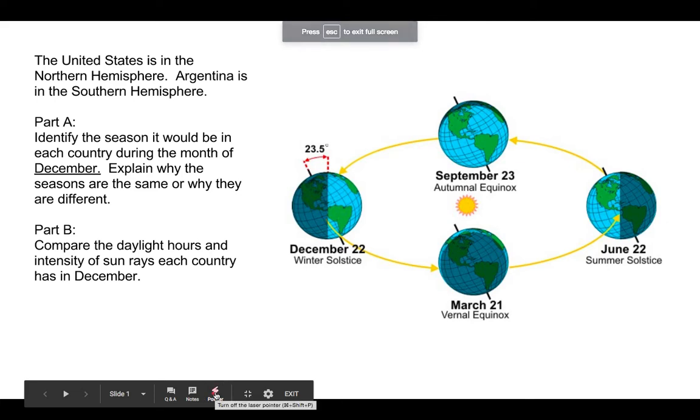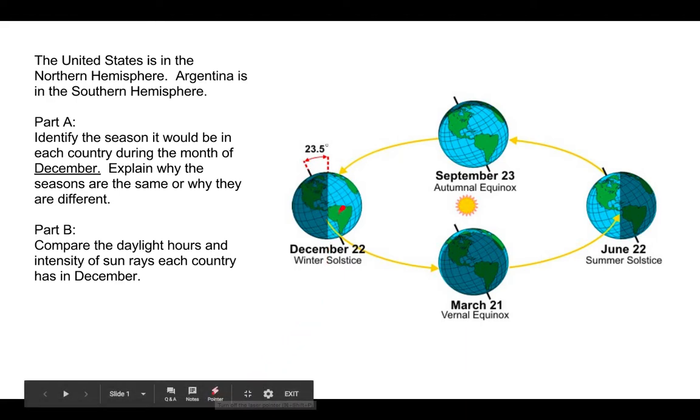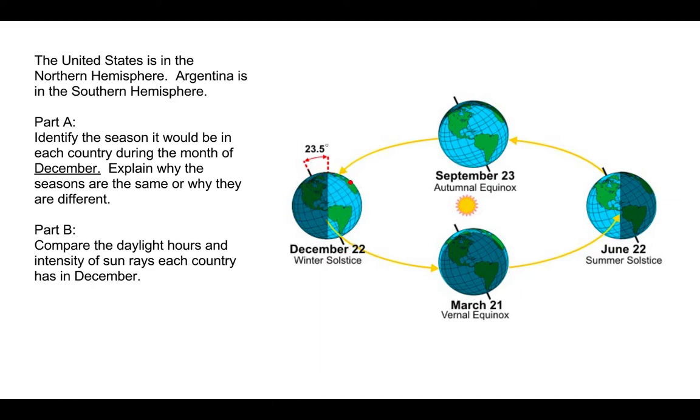Okay, the United States is in the northern hemisphere. Argentina is in the southern hemisphere. I'm going to focus on this picture of Earth right here. Northern hemisphere is in the top half where we are, and then Argentina is in the bottom half of the globe.